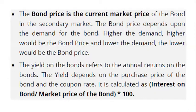The bond price is the current market price of the bond in the secondary market, and it depends upon demand — higher the demand, higher the bond price, and lower the demand, lower the bond price. The yield on the bond refers to the annual returns on the bond. The yield depends on the purchase price and the coupon rate, calculated as: (interest on the bond / market price of the bond) × 100.